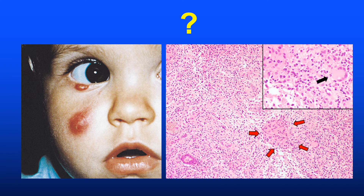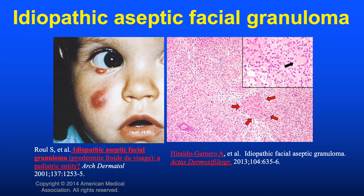Here's one for the pediatric dermatologists. In the photomicrographs we have granulomatous inflammation with scattered lymphocytes, a neutrophil (black arrow), and possibly some eosinophils — granulomas with a number of other inflammatory cells, classifiable as either tuberculoid or suppurative granuloma. These are examples of idiopathic aseptic facial granuloma, regarded as a unique expression of childhood rosacea with one or a small number of inflammatory nodules. Fortunately, this condition is self-limited.